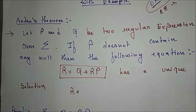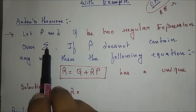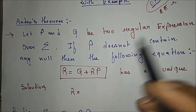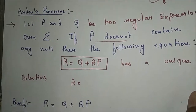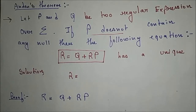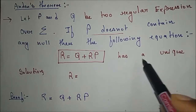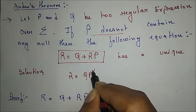Let P and Q be two regular expressions over sigma, our input symbol sigma. If P does not contain any null value, then the following equation can be written as R equal to Q plus RP. This equation has a unique solution, which can be written as R equal to QP*.